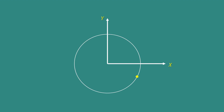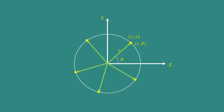Now, let us consider a particle which moves in a circular path. Let us draw two-dimensional coordinate axis X and Y. The radius of this circle is R. The position of this point may be here, or here, or here — the position of this point on the circular path can be obtained in terms of Cartesian coordinates X, Y, or in terms of polar coordinate R and theta.